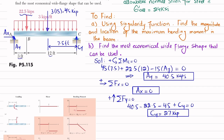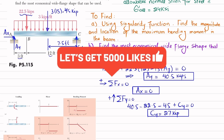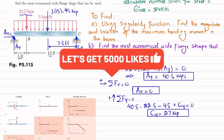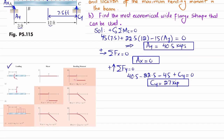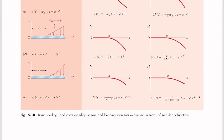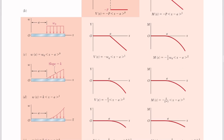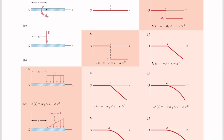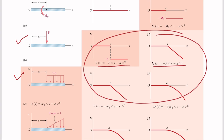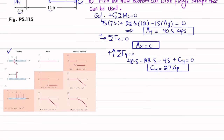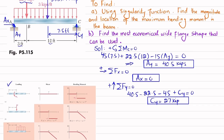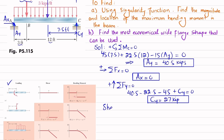Now that we have all reaction forces, we will find the shear force equation and bending moment equation using singularity functions. We reference the table from the book showing basic loads and corresponding shear and bending moment expressed in terms of singularity functions. We are using equations for a point load and a distributed load.